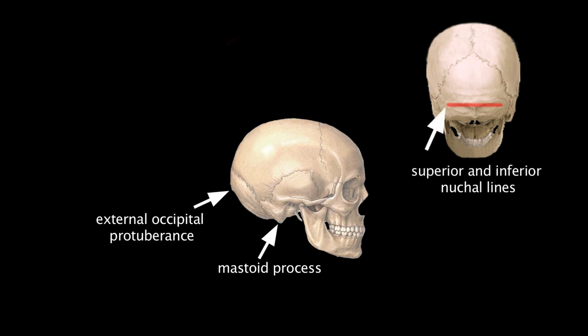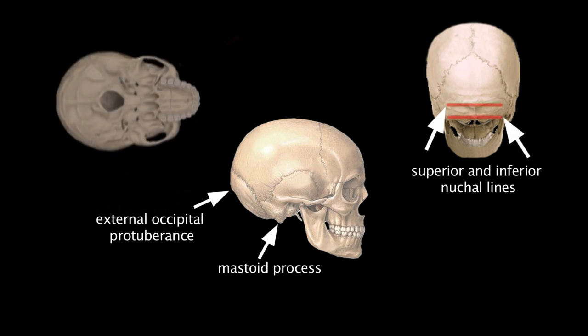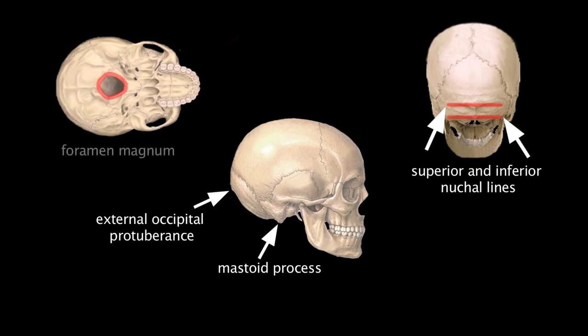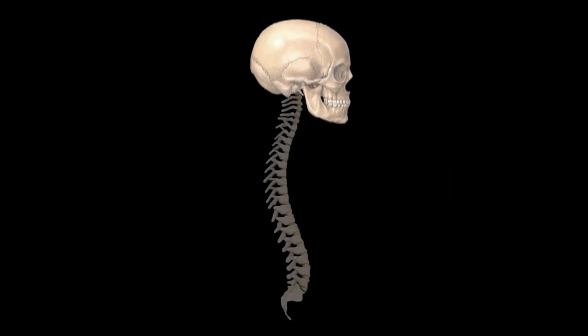referred to as the superior nuchal line. And just below that, there's another ridge called the inferior nuchal line. At the base of the skull, there's a large hole called the foramen magnum. This is where the spinal cord exits the cranial cavity and travels through the vertebral column, which is made up of 33 individual vertebrae.